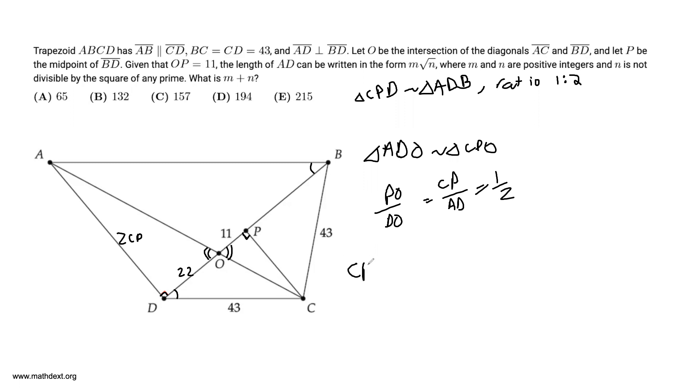We can find CP. CP is equal to square root of 43 squared minus 33 squared. This is Pythagorean theorem. CP squared is CD squared minus DP squared.